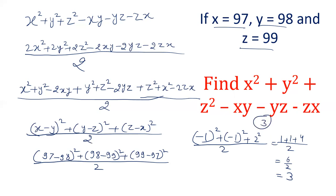So friends, what we did initially: the expression was in that format, and what we did is we multiplied all the terms by 2 and then divided by 2. This helped us create 3 perfect squares, which made the question very easy. I hope friends you liked this video. Please like our videos and subscribe to our channel. Thank you.